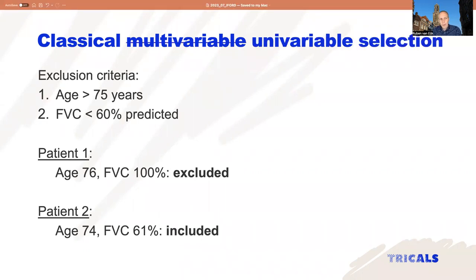What I would like to challenge today is that this is not a multivariable way of selecting patients — it is actually a univariable way. Every patient needs to fulfill a univariate inclusion criterion.